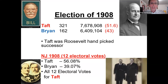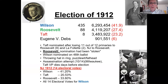Roosevelt helped Taft win, then ran off to Europe and went on safaris. But while away, he found out Taft was not following his policies and got very angry. Taft won with a huge victory — 56% — for New Jersey.